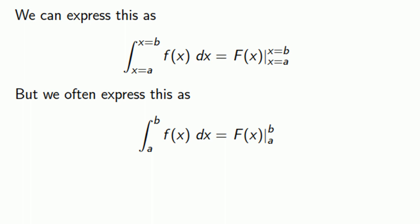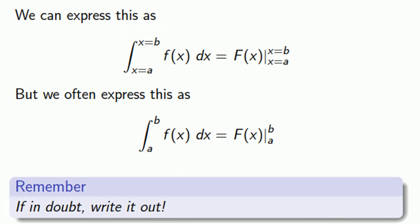However, here's an important idea. When we see this form, there is an implied x equals, x equals a, x equals b, and if in doubt, write it out. Paper is cheap.